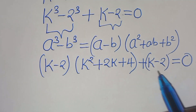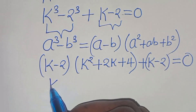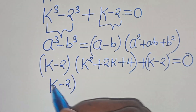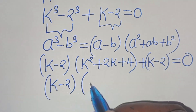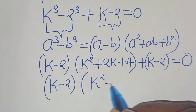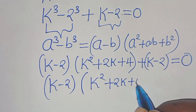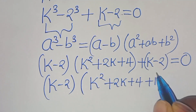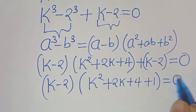k minus 2 is common here, so we can factor out k minus 2, so that into the parentheses we have k squared plus 2k plus 4 plus 1, this is equal to 0.